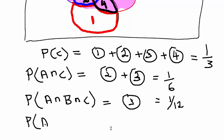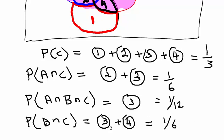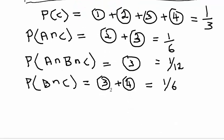Just one more. Probability of B intersection C is equal to areas 3 and 4. And that is equal to 1 sixth also. So what does that mean? That area 4 must equal to 1 over 12 also.